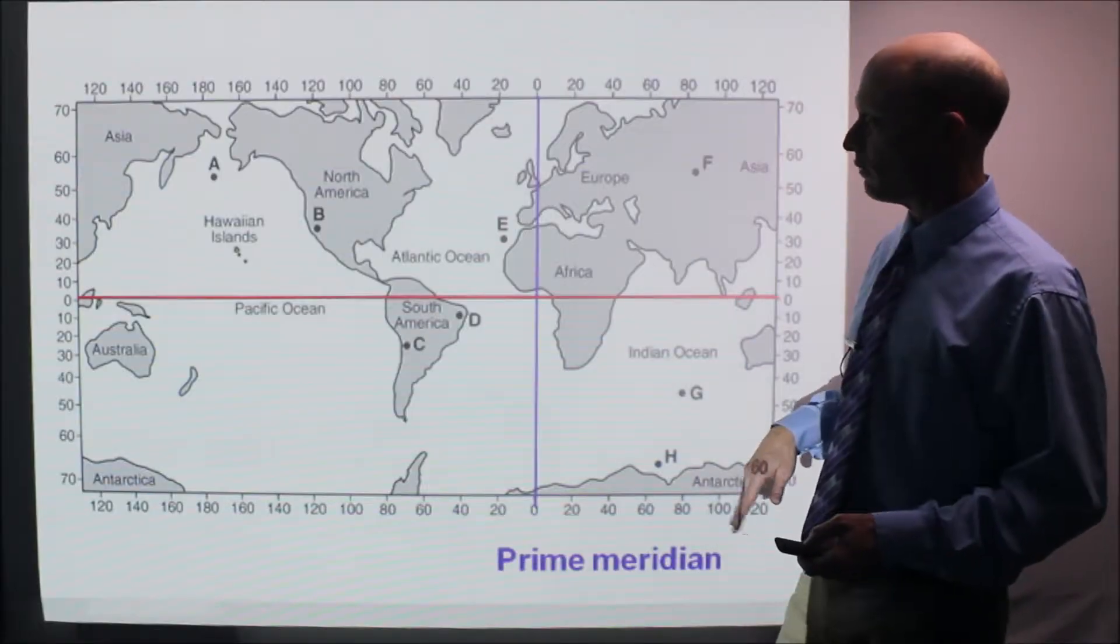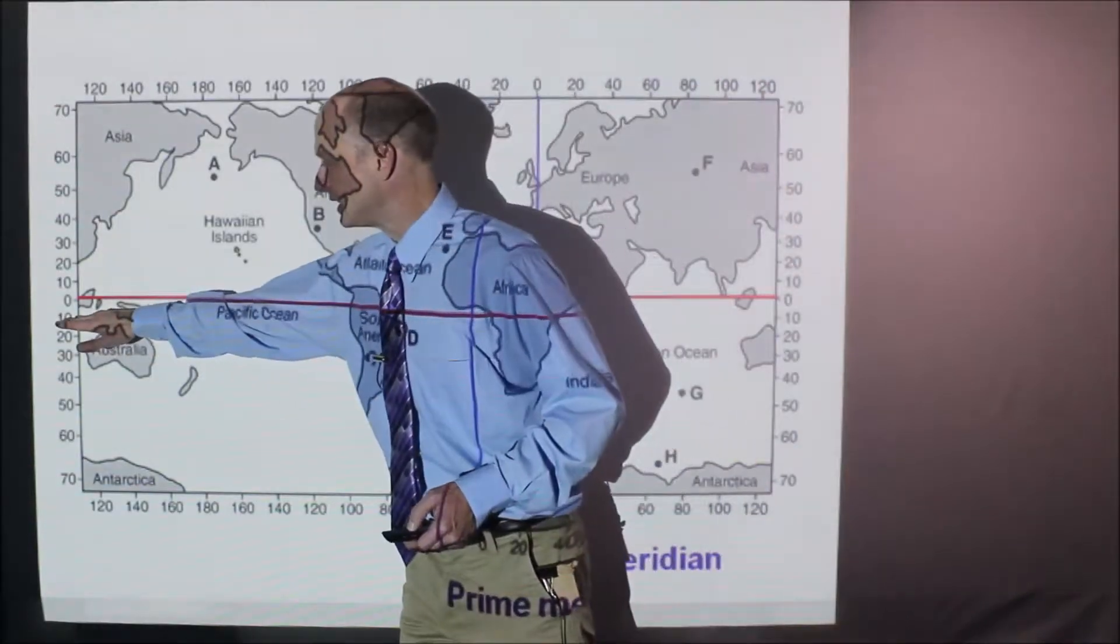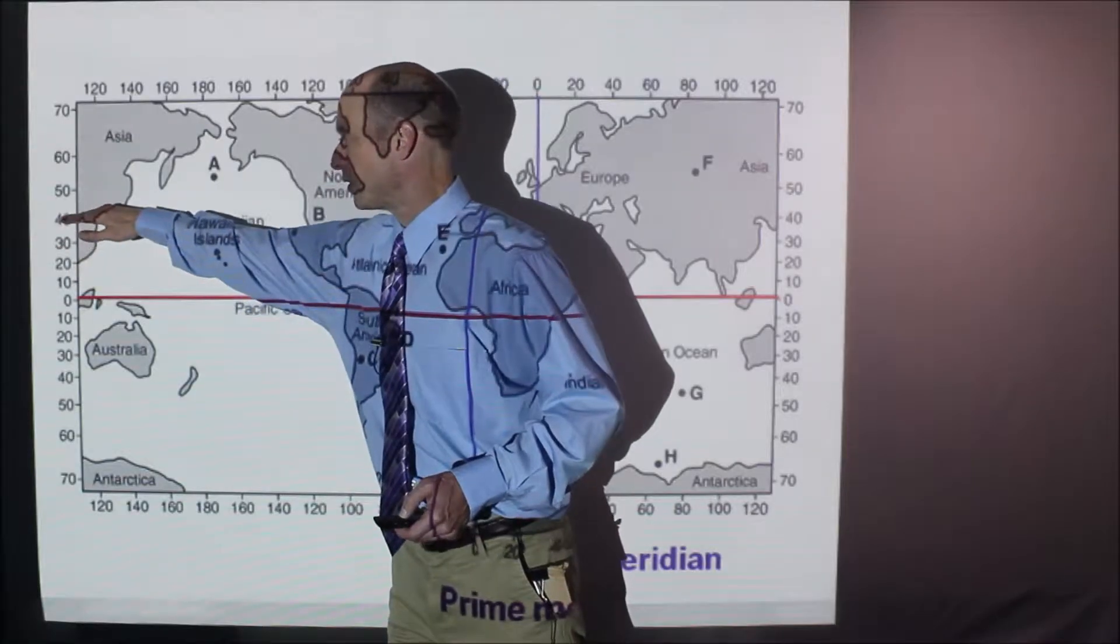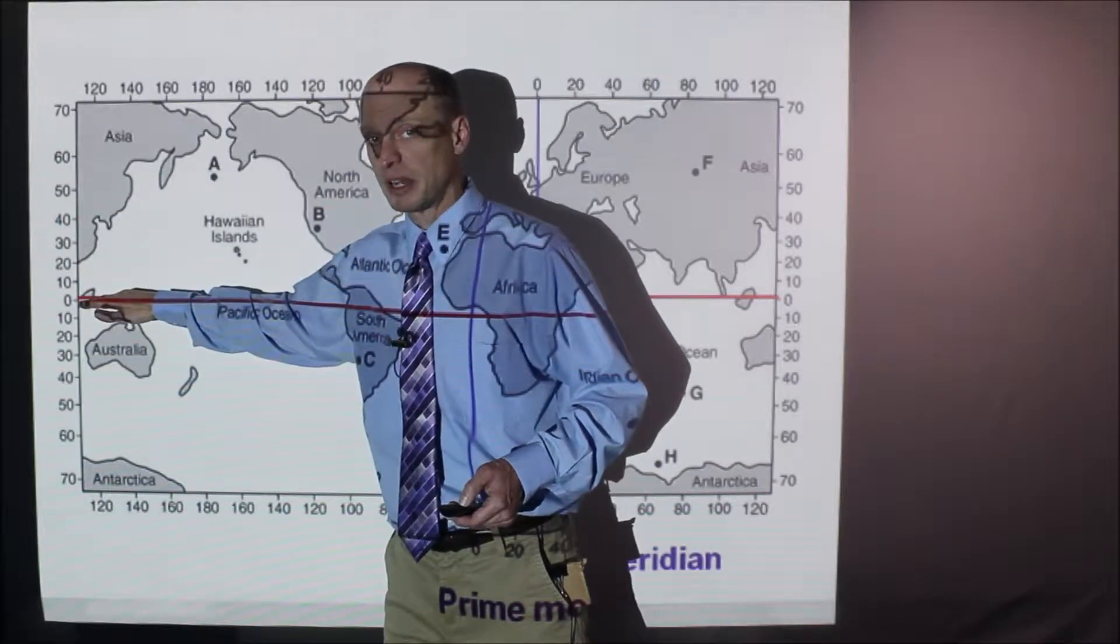And then here I drew in the equator in red. So all of these numbers, this is 10 degrees south, 20 degrees south, 30 degrees north, 40 degrees north, because those are all compared to the equator.